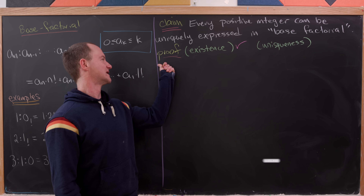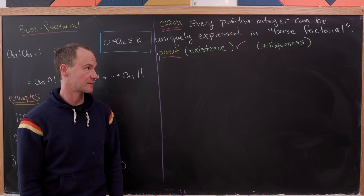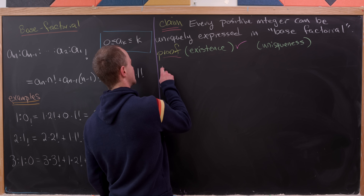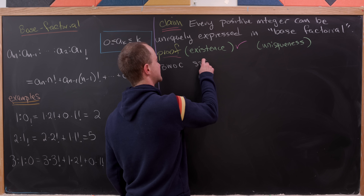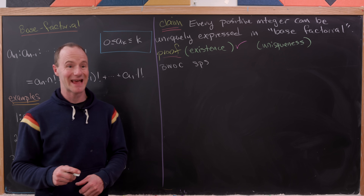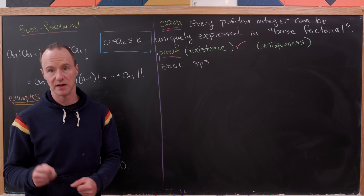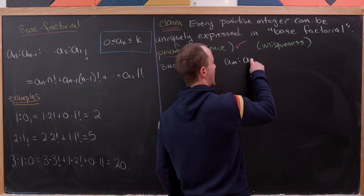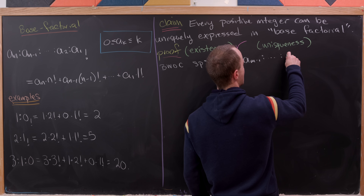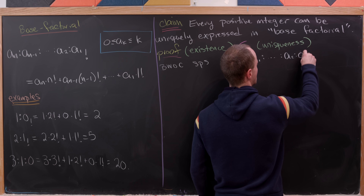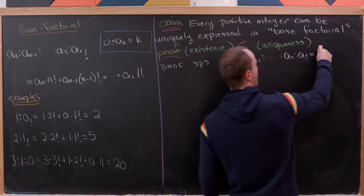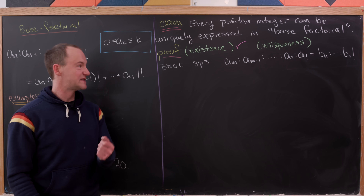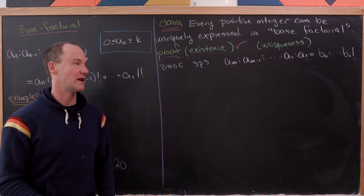We've just shown that there exists a factorial representation for every positive integer. Now we're going to show that that representation is unique, and we'll do that by way of contradiction. So by way of contradiction, suppose we have a natural number with a non-unique expansion base factorial — meaning (a_m : a_{m-1} : ... : a_2 : a_1) sub factorial equals (b_n : ... : b_1) sub factorial, where potentially the a's and the b's are not the same set of numbers.